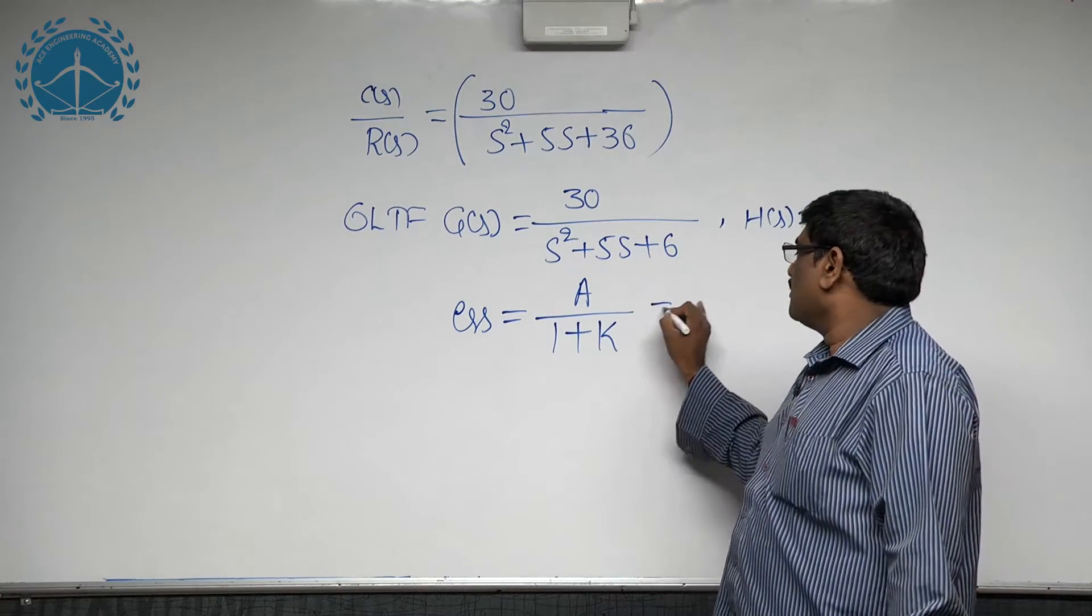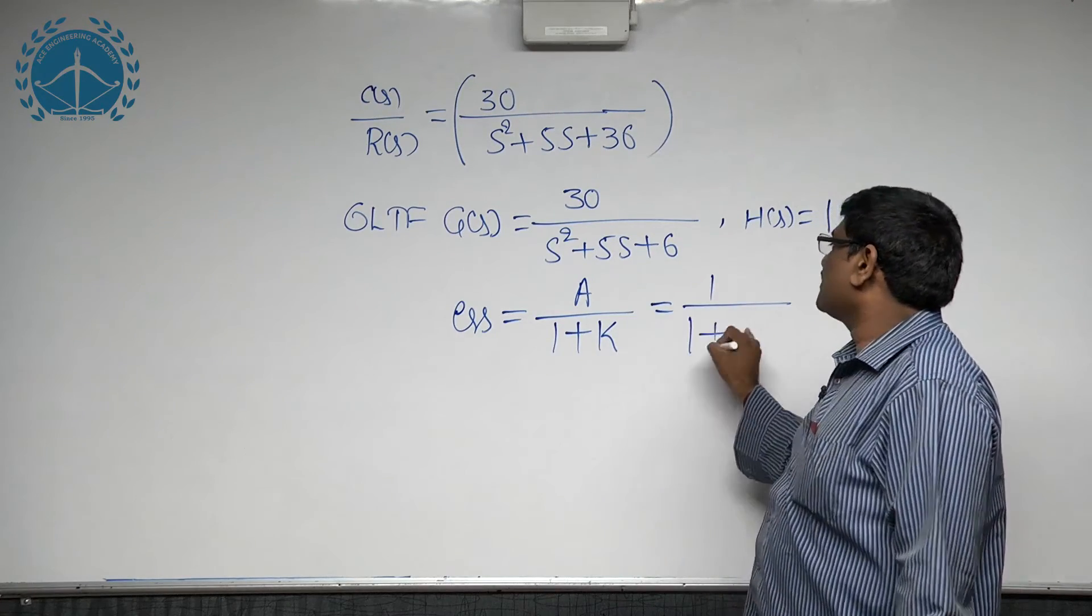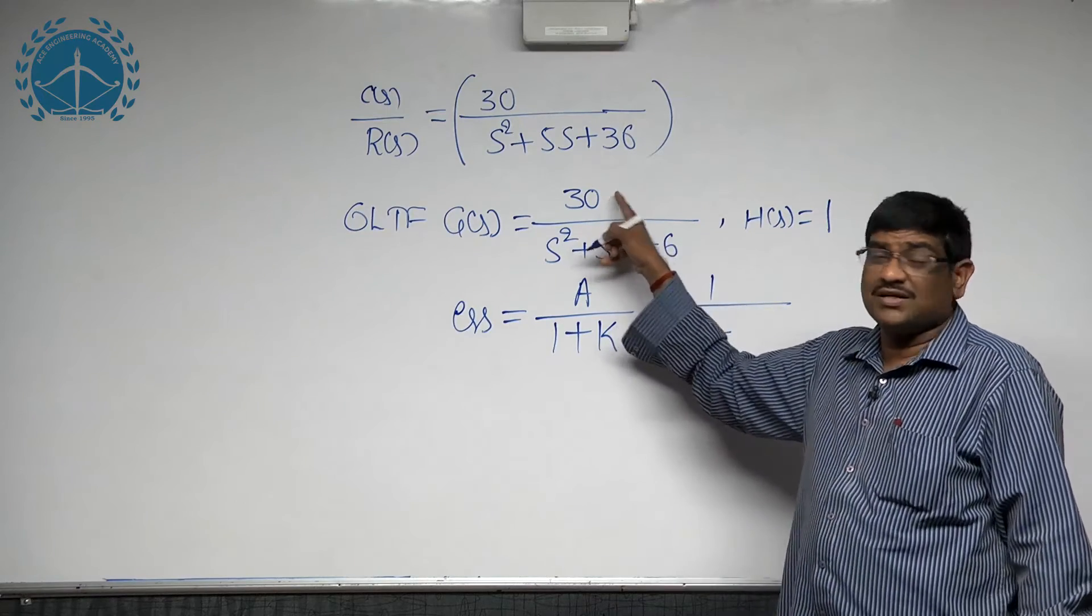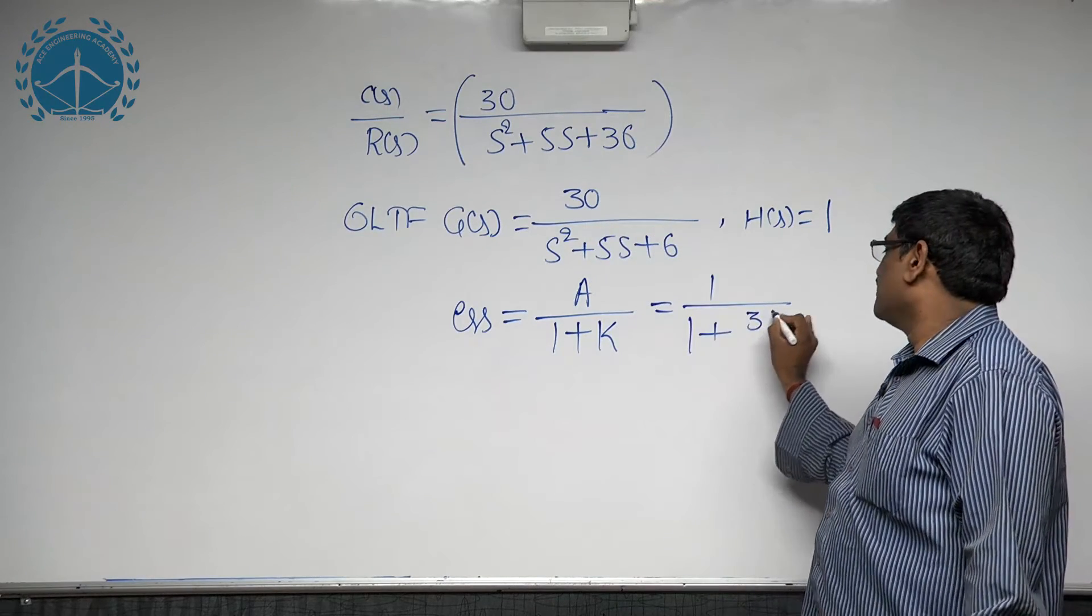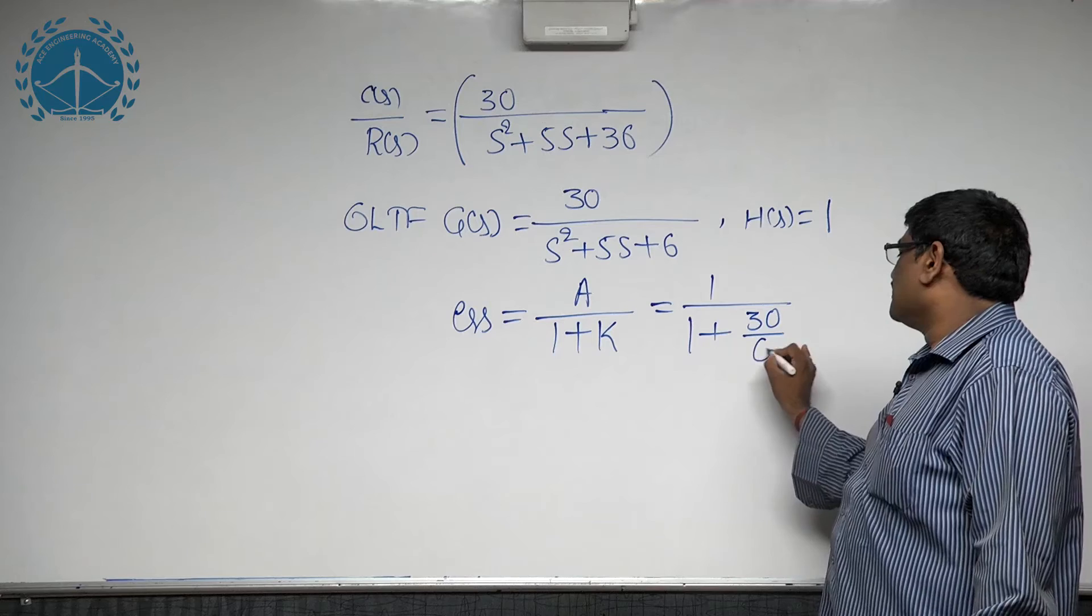The A is 1 divided by 1 plus k, where k is the numerator constant by denominator constant, that is 30 by 6.